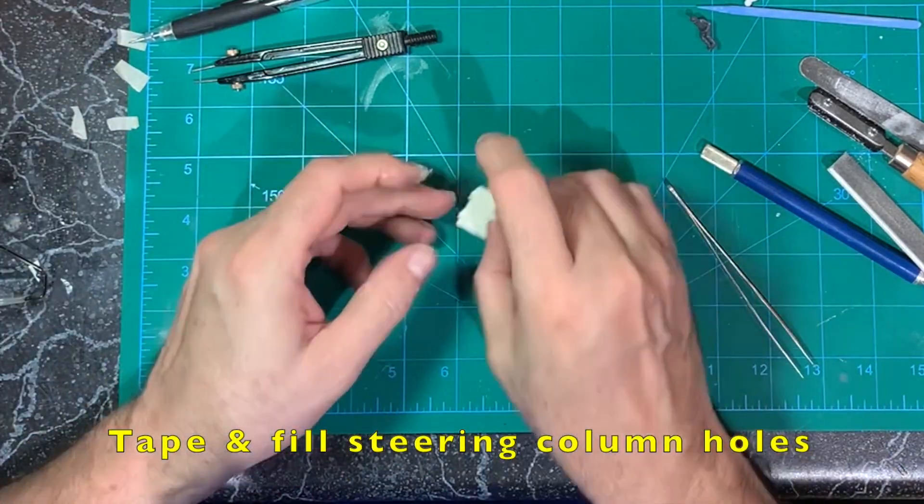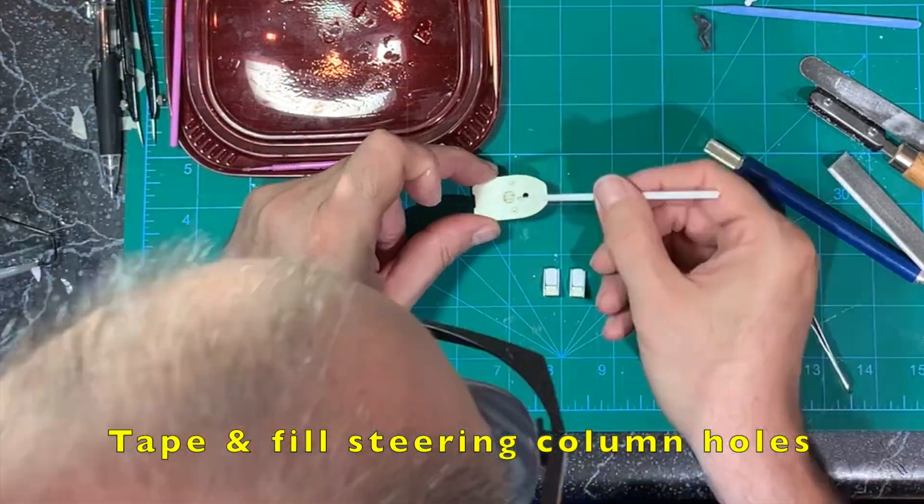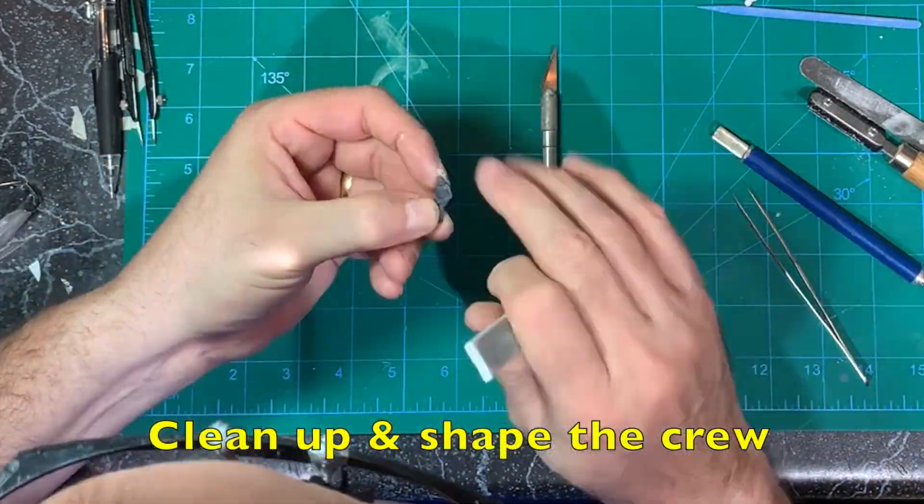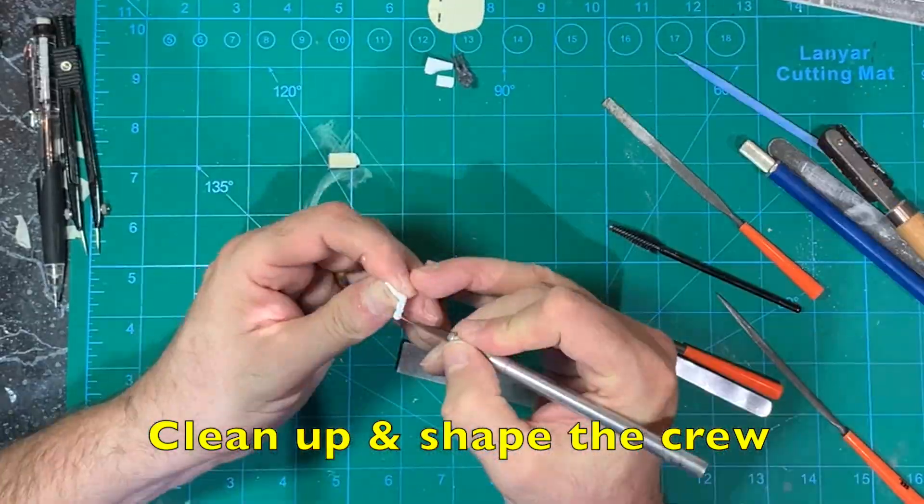I use more thick sheet styrene to create seat back cushion, marking them to size against the seat and cutting them out with my razor saw. Then test fitting them in the seats. Having determined I'm not placing the columns in the kit provided holes, I tape one side, then fill them with thick super glue from the other side. I proceed with cleaning up the new crew pieces, scraping seam marks, filing and sanding them into shape.